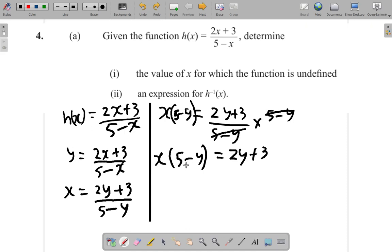We multiply, expand these brackets. So x times 5 plus x times, minus x times y. X times 5 is 5x minus x times y is xy. Equals 2y plus 3.